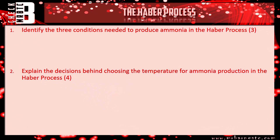Okay, let's have a look. Number one: identify the three conditions needed to produce ammonia in the Haber process. Temperature is 450 degrees C — one mark. Pressure is 200 atmospheres. And your catalyst is an iron catalyst. One mark for each of those.